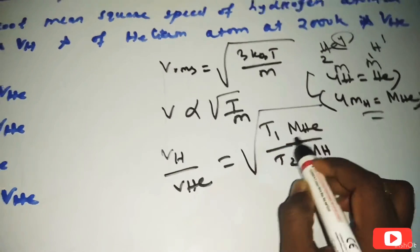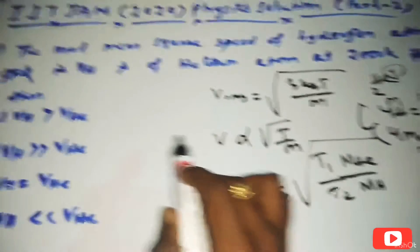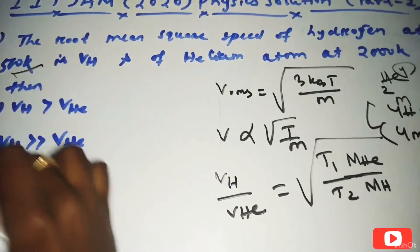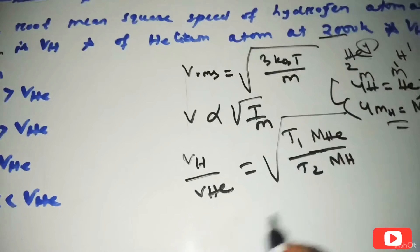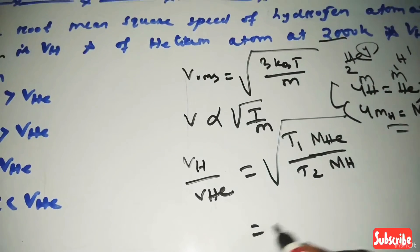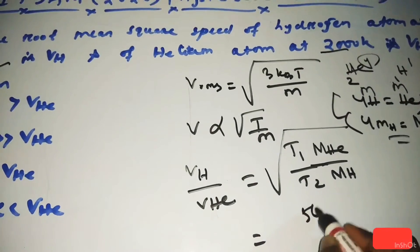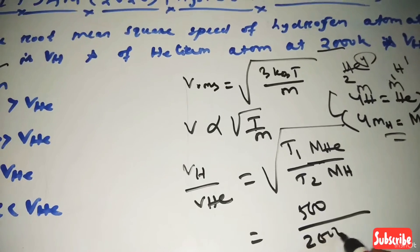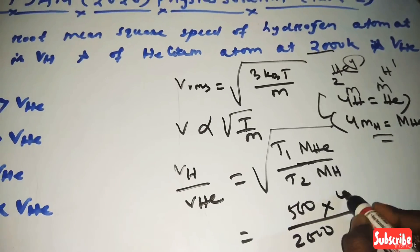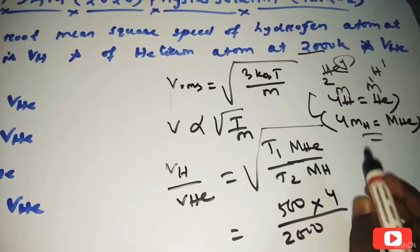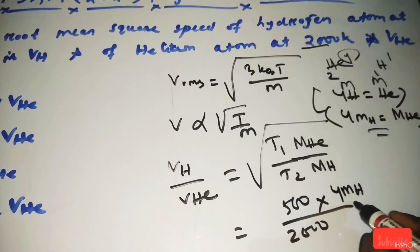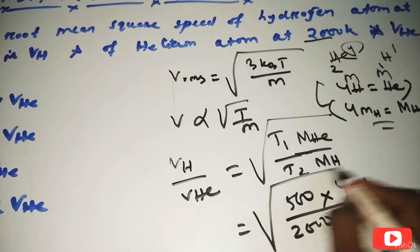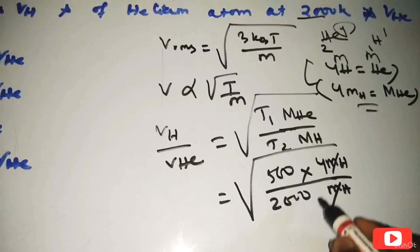T1 for hydrogen atom is 500 Kelvin, that is T1, and 2000 Kelvin is T2. Now we put T1/T2 = 500/2000. The mass of helium is 4 times the mass of hydrogen. So VH/V_helium = √(T1/T2 × m_He/m_H) = √(500/2000 × 4/1). Mass of hydrogen cancels appropriately.